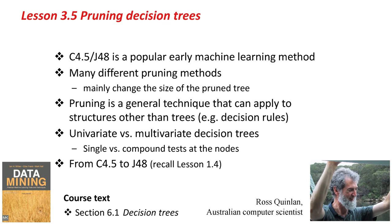There's a lot more we could say about decision trees. For example, we've been talking about univariate decision trees — ones that have a single test at each node — but you can imagine a multivariate tree where the test at a node involves multiple attributes. In general, C4.5 is a popular and useful workhorse algorithm for data mining. You can read more about decision trees in the course text, which gives the mathematical details of the pruning methods in section 6.1. It's time for you to do the activity — see you in the next lesson. Bye for now!